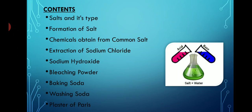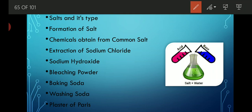Let's see what content we will study in this video. Starting with the first topic: salt and its types. Second: formation of salt. Third: chemicals obtained from common salt — what different chemicals we can obtain from salt. Fourth: extraction of sodium chloride. Along with that, preparation and uses of sodium hydroxide (also called caustic soda), bleaching powder, baking soda, washing soda, plaster of Paris, and water of crystallization.